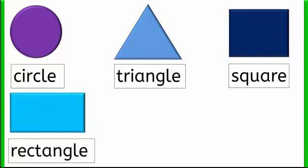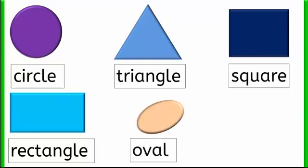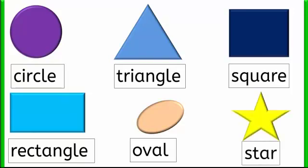Rectangle — rectangle starts with the letter R and it has four corners. Oval — oval starts with the letter O and it has no corners. Star — star starts with the letter S and it has five corners.